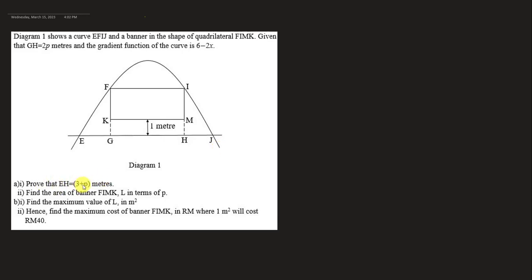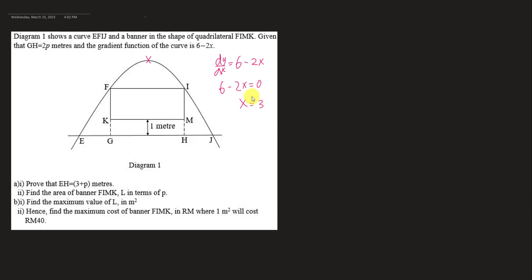They ask us to prove that EH equals 3 plus P. This is a quadratic equation, and any quadratic has a turning point, which is also the maximum. Since dy/dx equals 6 minus 2x, we find the turning point by setting dy/dx equals zero. So 6 minus 2x equals zero, giving x equals 3. So we have an axis of symmetry at x equals 3.